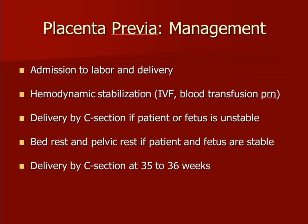Once bleeding associated with a placenta previa has occurred, management includes admission to the hospital with stabilization of the patient. The first episode of bleeding from a previa will usually stop on its own. If the fetus is preterm and both the patient and the fetus are stable, the patient will be kept in the hospital on bed and pelvic rest until delivery. Delivery is performed via cesarean section, usually around 35 to 36 weeks. Waiting any longer increases the risk of a life-threatening bleed. If heavy bleeding recurs or if the patient or fetus is not stable, delivery will be performed by cesarean section.